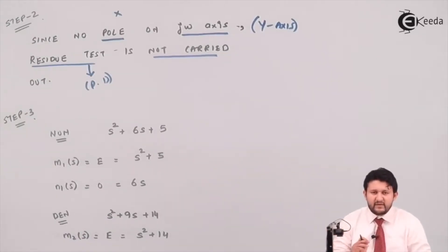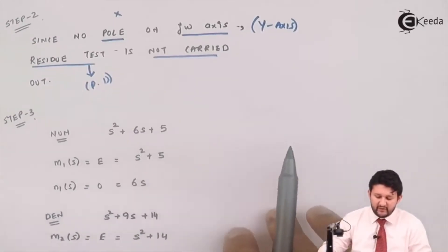Step 3. I need to find A of omega squared. For that, the numerator should be divided into even and odd. For the numerator, I have termed as m1 and n1. For the denominator, again you have to separate even and odd function as m2 and n2.